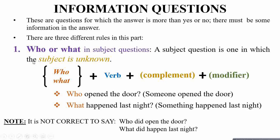There are three different rules in information questions. First is who or what in subject questions. A subject question is one in which the subject is unknown. The sentence structure for a subject question is: who or what, followed by verb, then complement and modifier.